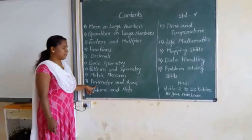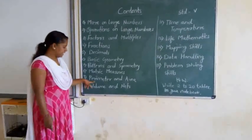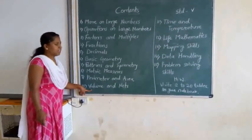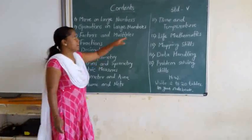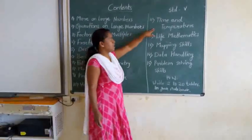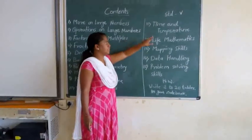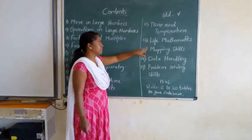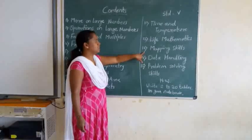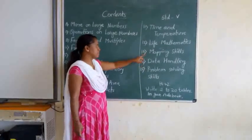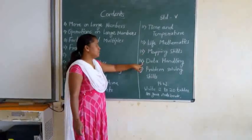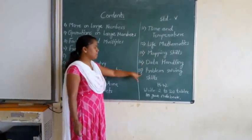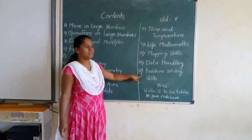Eighth one is metric measures. Ninth one is perimeter and area. Tenth one is volume and capacity. Eleventh one is time and temperature. Twelfth one is Vedic mathematics. Thirteenth one is mapping skills. Fourteenth one is data handling. Fifteenth one is problem solving skills.